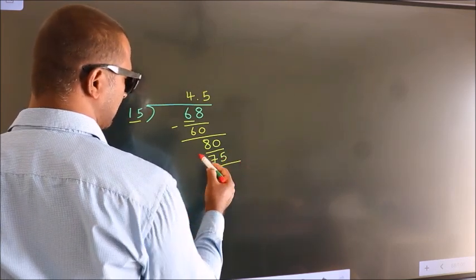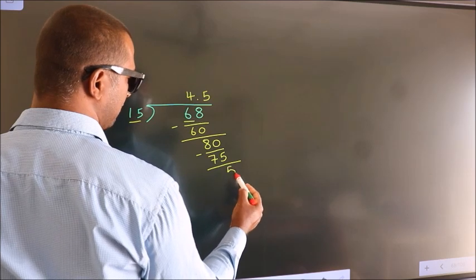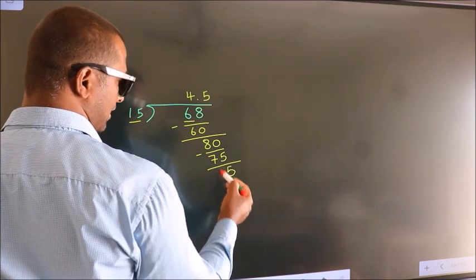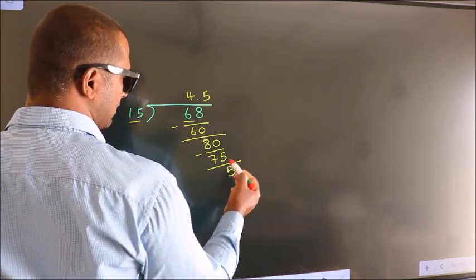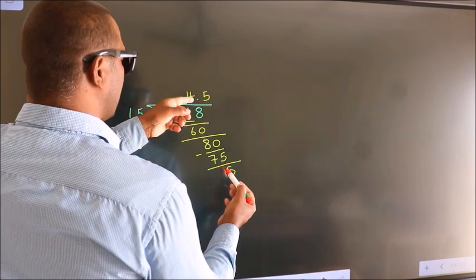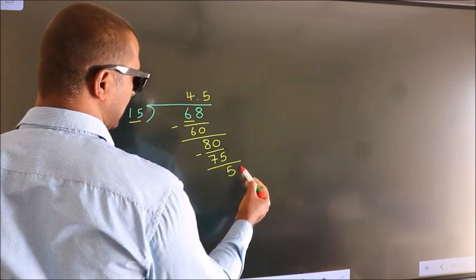Now we subtract. We get 5. After this we already have the decimal, so directly take 0.